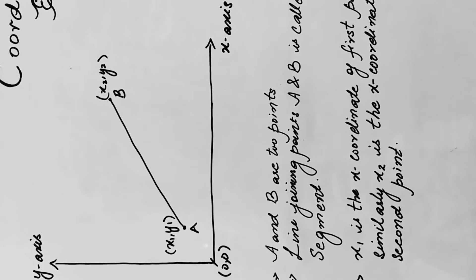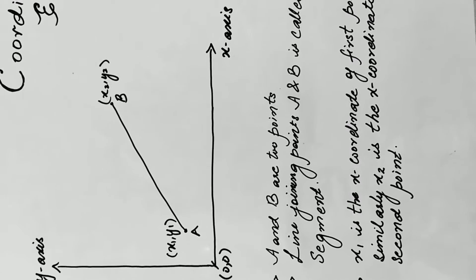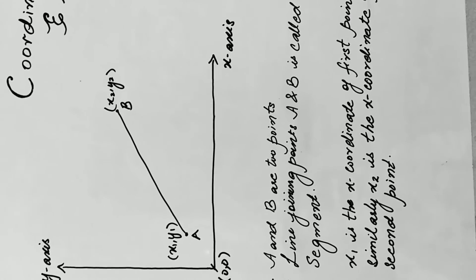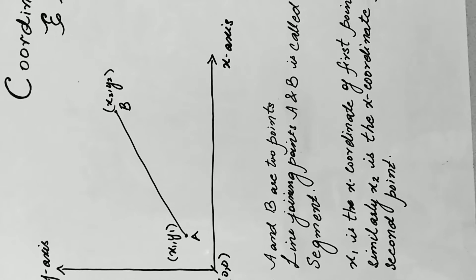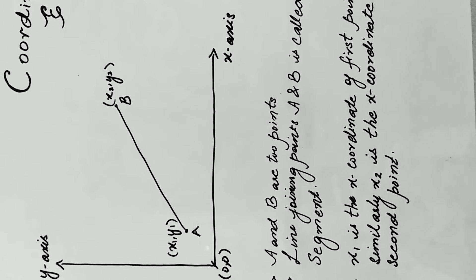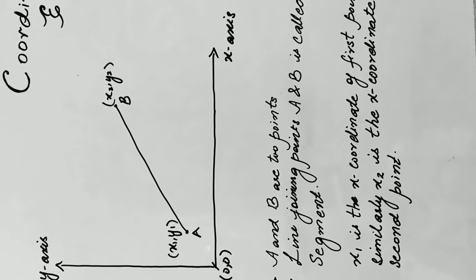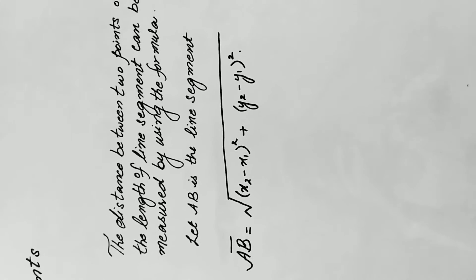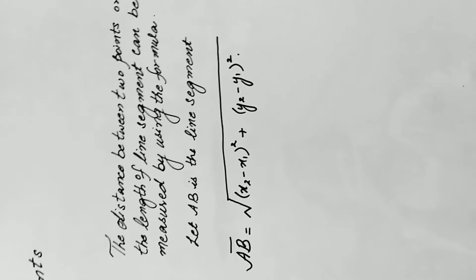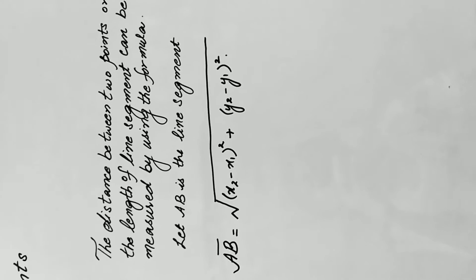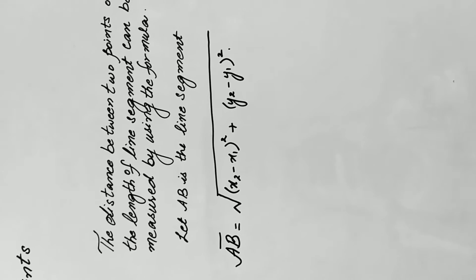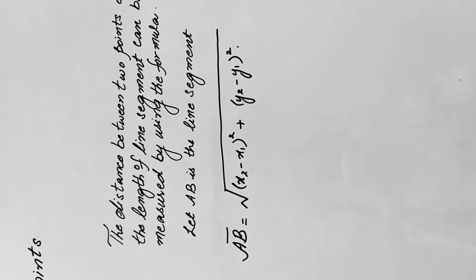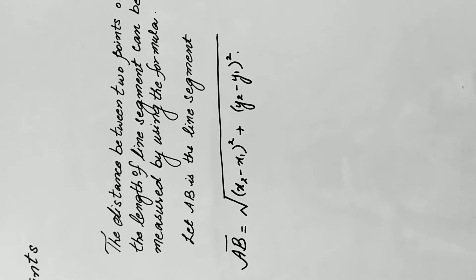x and y are the x-coordinate and y-coordinate. Here x1 is the coordinate of the first point on the x-axis, and similarly x2 is the x-coordinate of the second point. The same goes with y1 and y2. We can find out the length of the line segment, which is also called the distance between the two points, by using the formula: under root of (x2 minus x1) squared plus (y2 minus y1) squared.